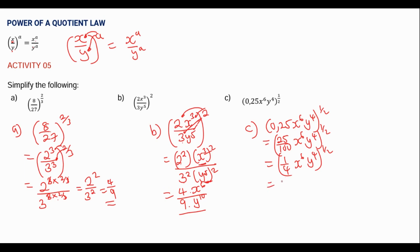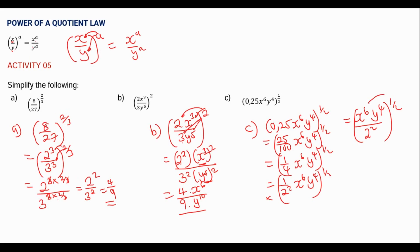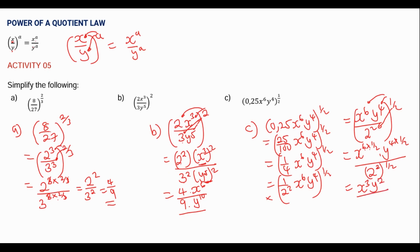Now 1/4 is like 1 over 2 squared. So we have 1 over 2 squared, times x to the power 6, y to the power 4, all to the power 1/2. This can be written as x to the power 6 y to the power 4 over 2 squared, to the power 1/2. Distributing the 1/2: x to the power 6 times 1/2 gives x to the power 3, y to the power 4 times 1/2 gives y to the power 2, and 2 squared to the power 1/2 gives 2 times 1/2 equals 1, so just 2. The final answer is x cubed y squared over 2.